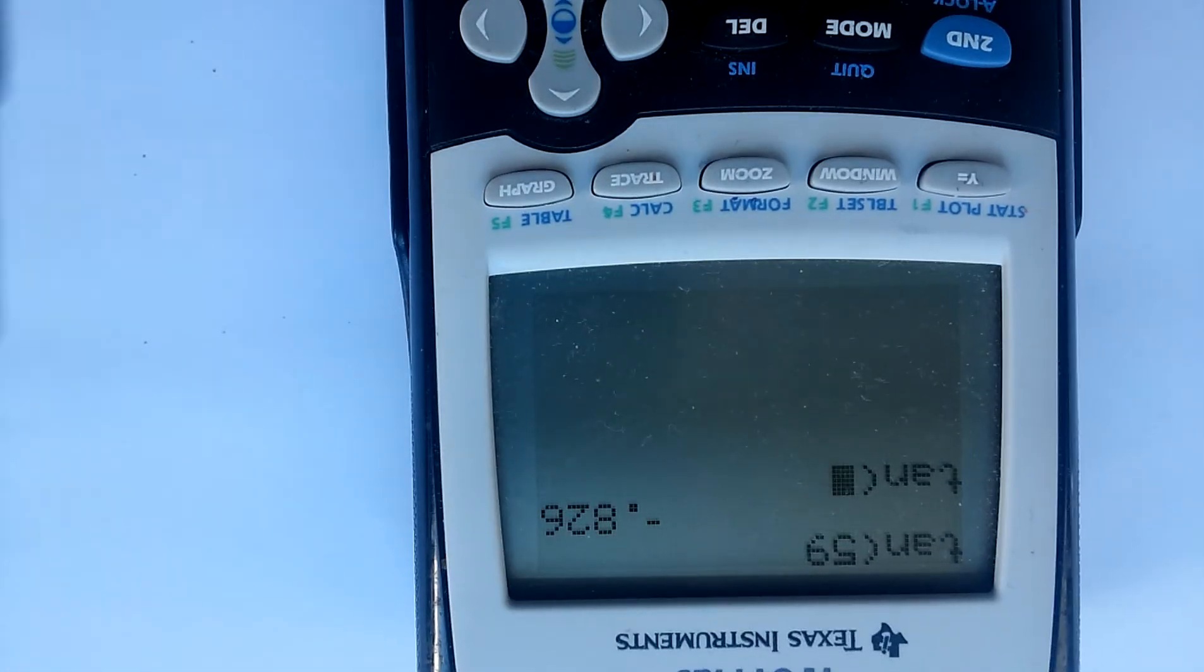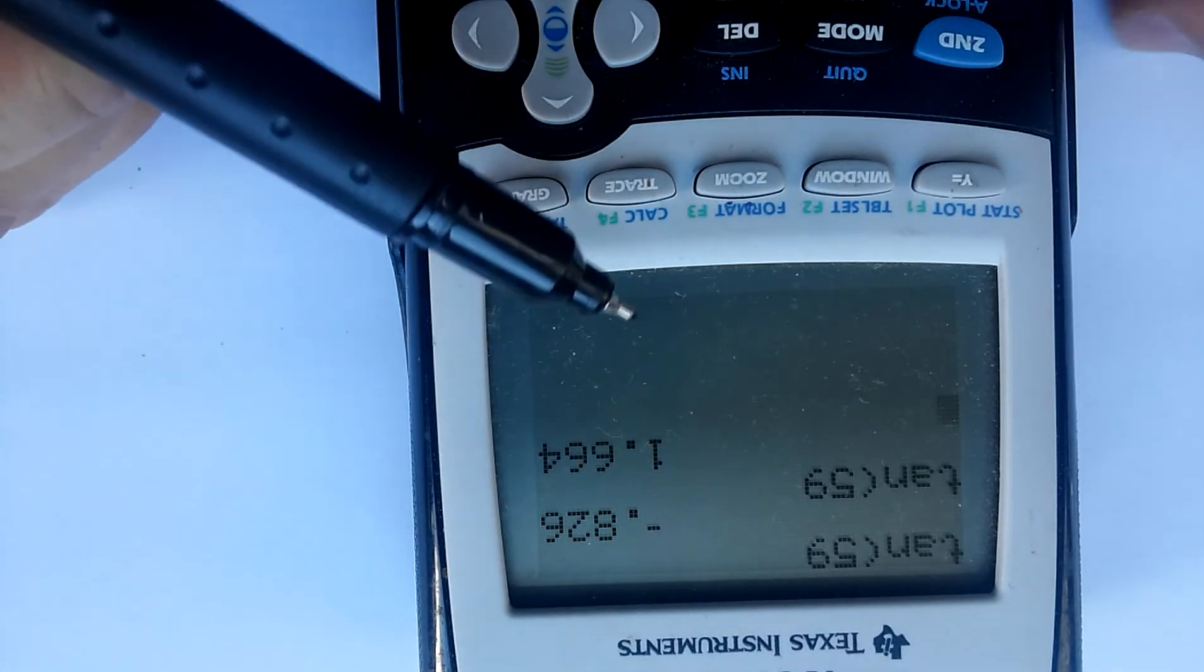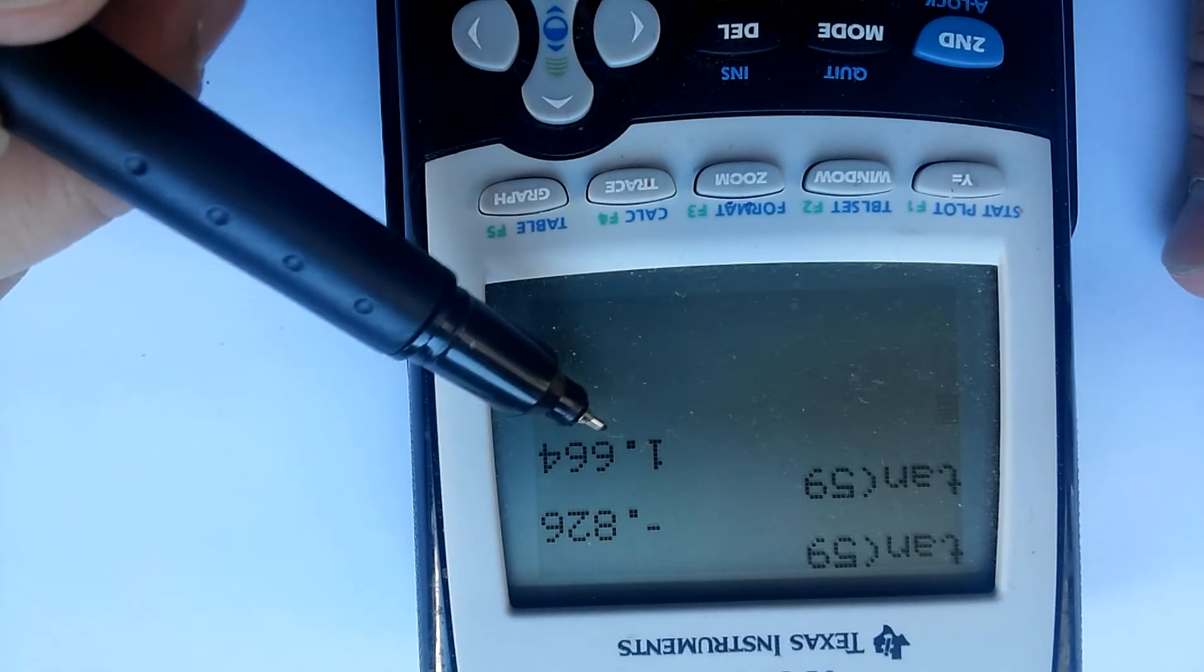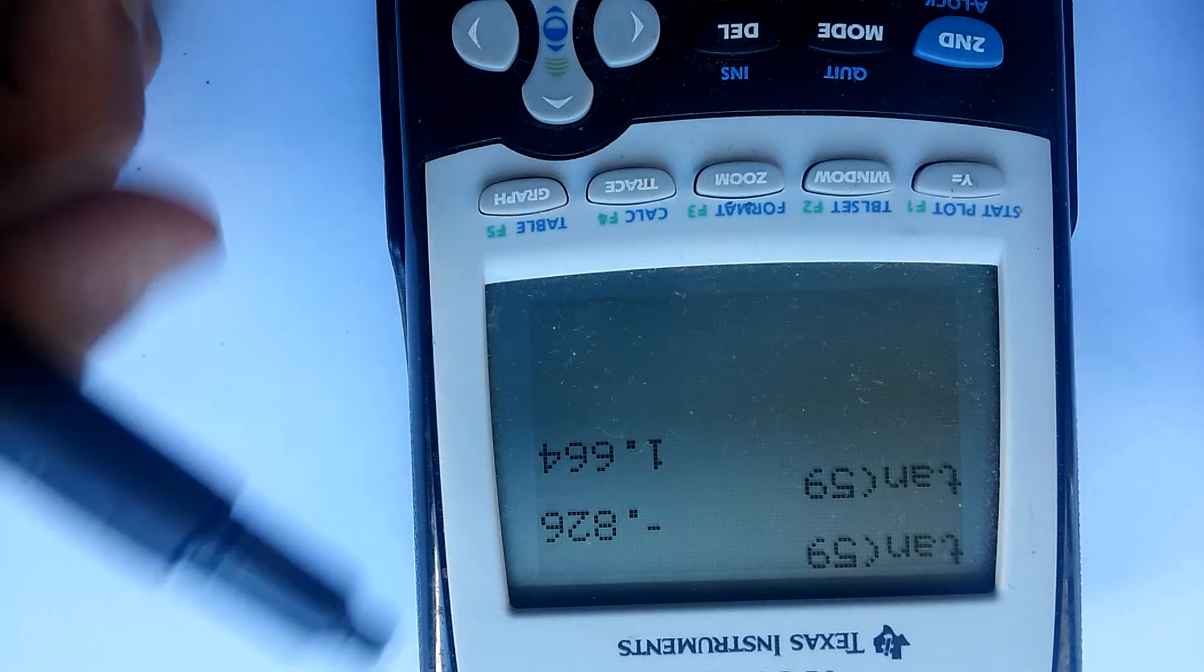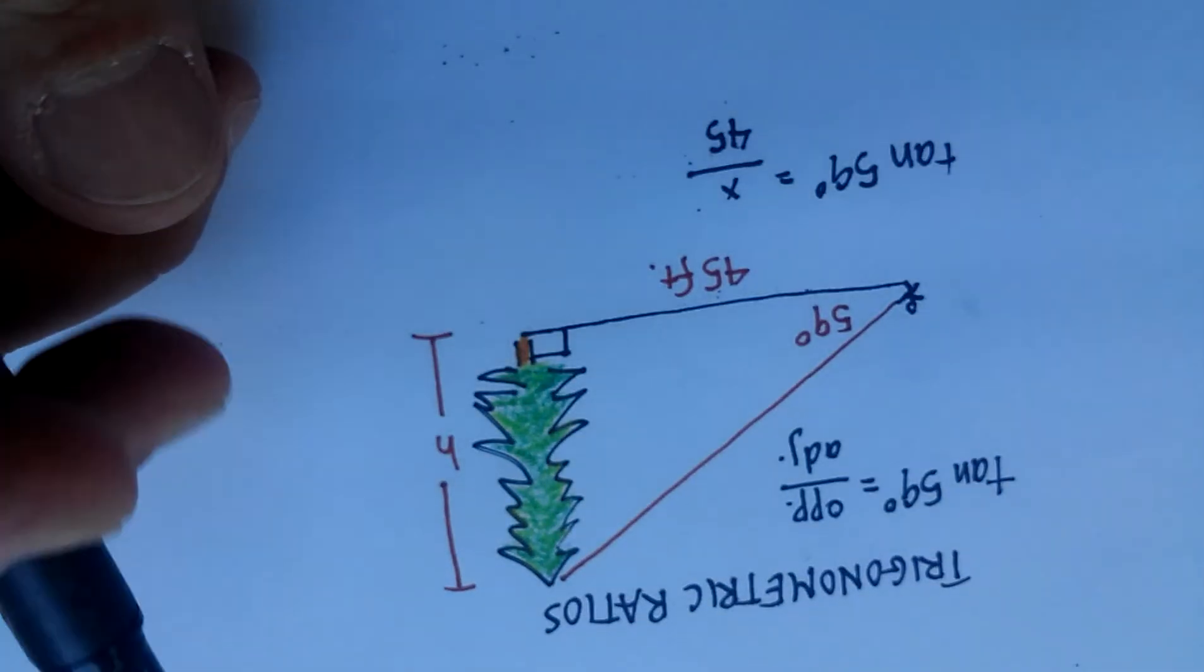59 degrees. Enter 59. And press enter. And you'll see that now it's 1.664. So that's what we're going to enter down here.